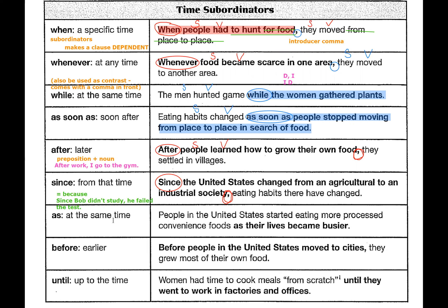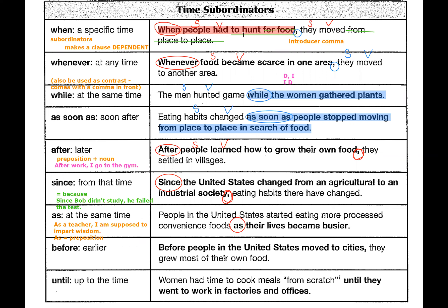And 'as' in this case means at the same time: 'People in the United States started eating more processed convenience food as their lives became busier.' No comma here because this is Independent then Dependent. 'As' is our subordinator. Like 'after,' 'as' can also be a preposition. For example: 'As a teacher, I am supposed to impart wisdom.' Here 'as' is a preposition because it's not followed by a clause — it's followed by a noun only.